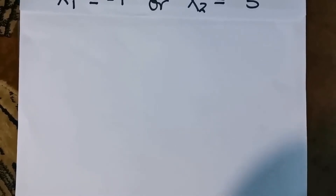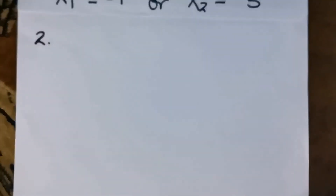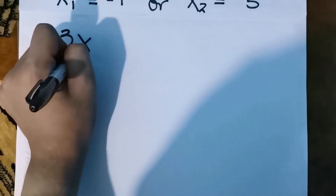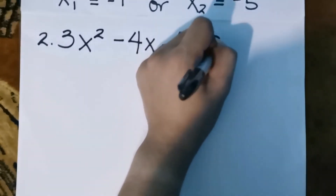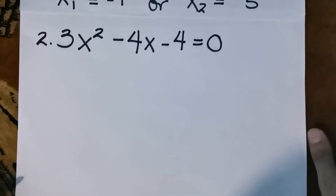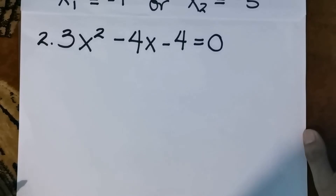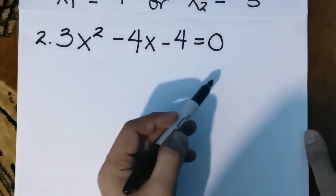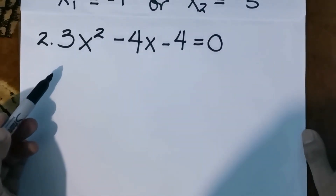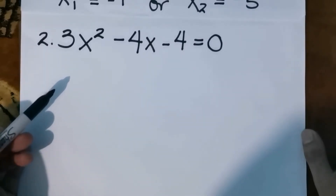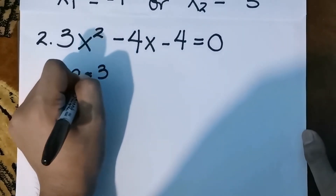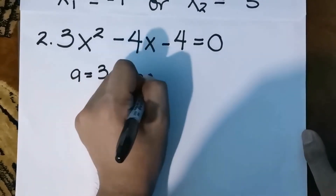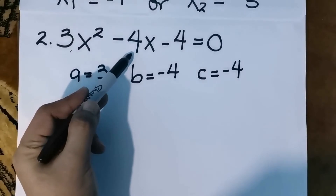Let's have another example. We are asked to get the solution set of the quadratic equation 3x² - 4x - 4 = 0 using the quadratic formula. Again, let us identify a, b, and c. As you can see, our quadratic equation is already in general form, so we can easily identify: a = 3, b = -4, and c = -4.